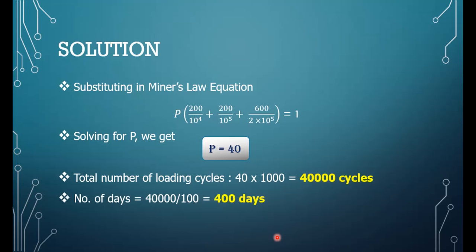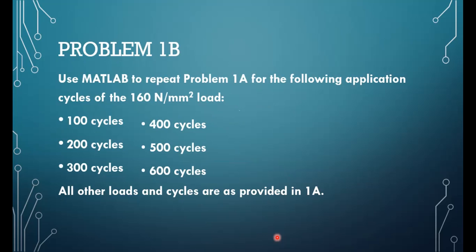We will now move to a similar kind of problem but apply MATLAB coding, since other than pen-and-paper problems we need to solve coding problems as well. To increase the level of complexity, part B asks that the 160 Newton per millimeter square load is now applied at 100, 200, 300, 400, 500, and 600 cycles separately. For all six different cases we need to find the number of days the component will last, while the rest of the problem — 200 and 140 Newton per millimeter square loads — remains the same.